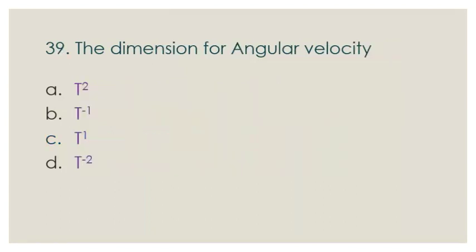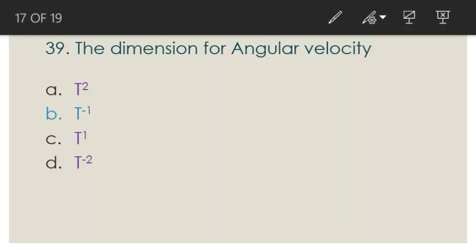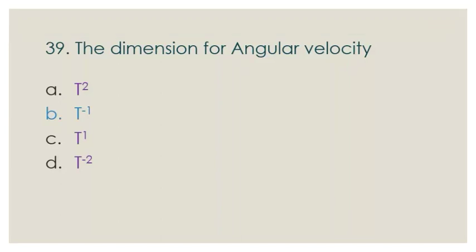Question number 39: The dimension for angular velocity — options: a) T², b) T⁻¹, c) T¹, d) T⁻². The dimension for angular velocity is T⁻¹, so option B is the correct answer.